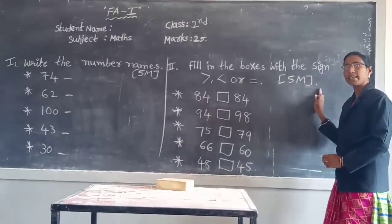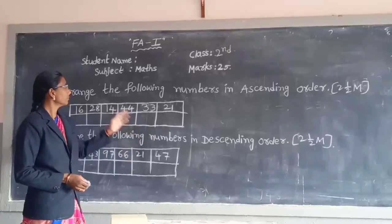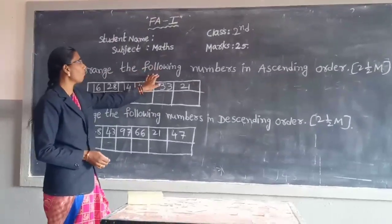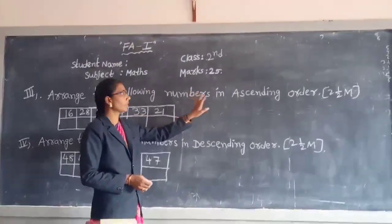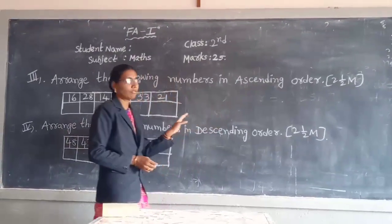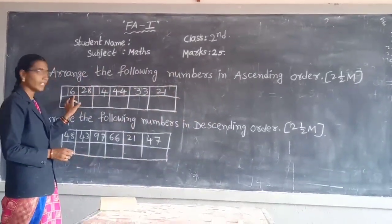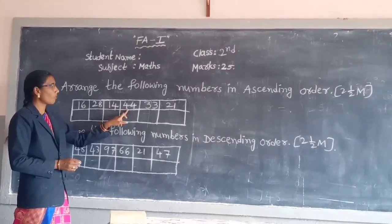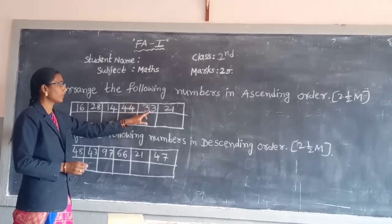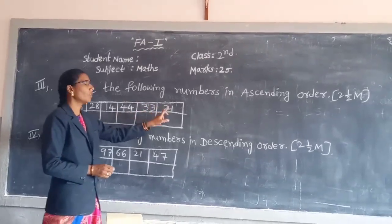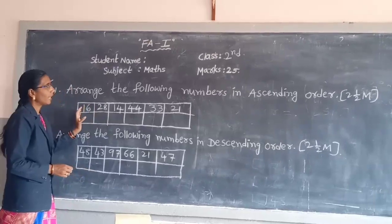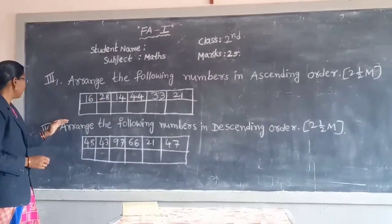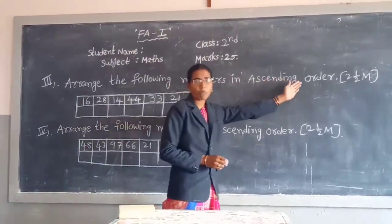First you make five marks and second you make five marks. Next, third means eight marks. Arrange the following numbers in ascending order: sixty, twenty-eight, forty-four, thirty-three, twenty-one. Three marks.